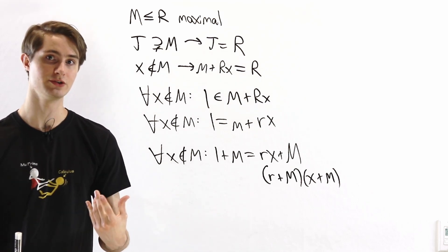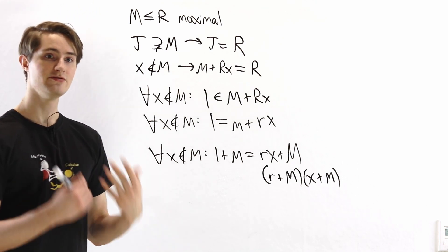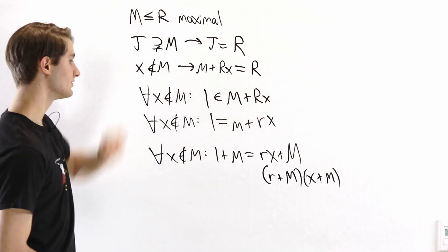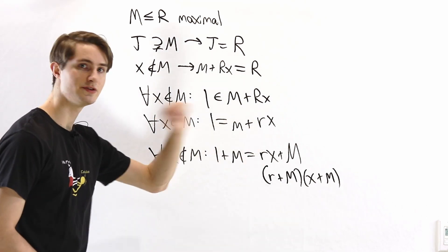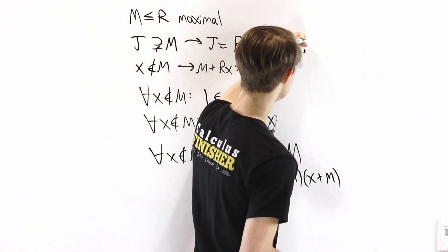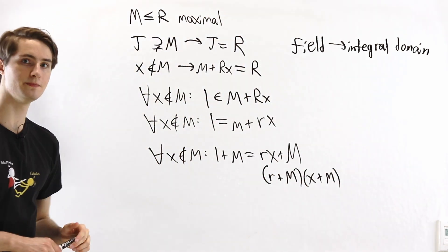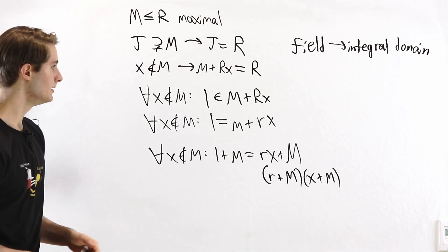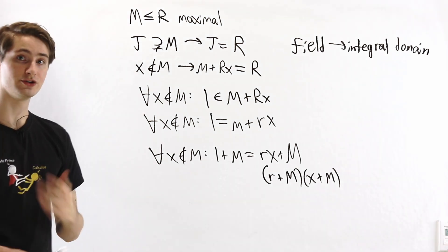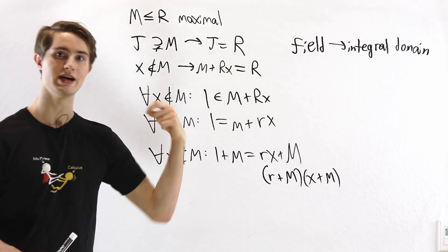Every nonzero element being a unit is exactly what is needed for a field. Since we already assumed R is a commutative ring with identity 1, we've shown that an ideal is maximal if and only if every nonzero element in the quotient ring is a unit — meaning R mod m is a field. Furthermore, since every field is an integral domain, and an integral domain quotient means the ideal is prime, this gives us an easy proof that every maximal ideal is also a prime ideal.